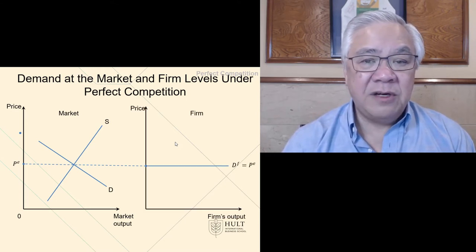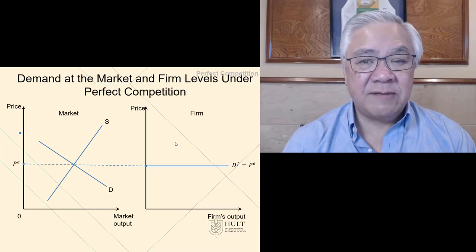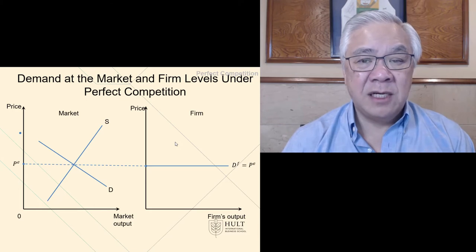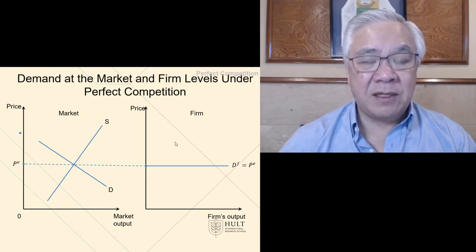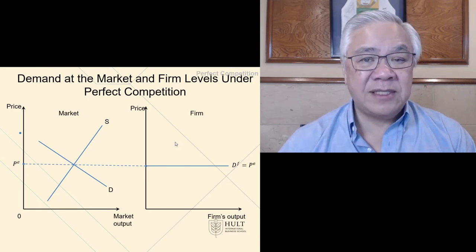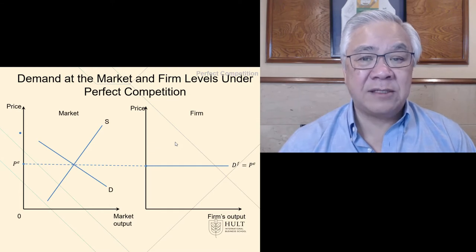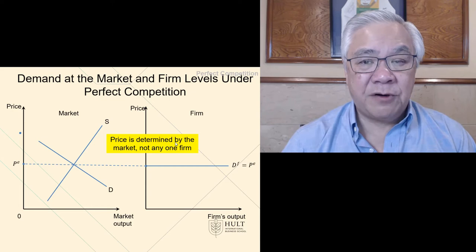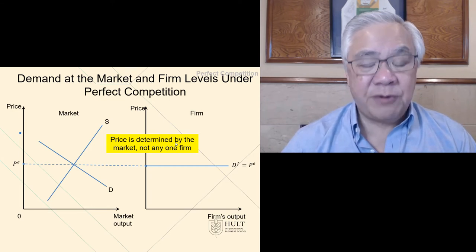In this case, then, if you're the firm, you do not see any sloping curves. You see one price because you are undifferentiated from all the other players, so you're going to accept the market price. So the line for price is actually a flat or horizontal line. Price is determined by the market, not any one firm, and therefore the firm sees a fixed price.